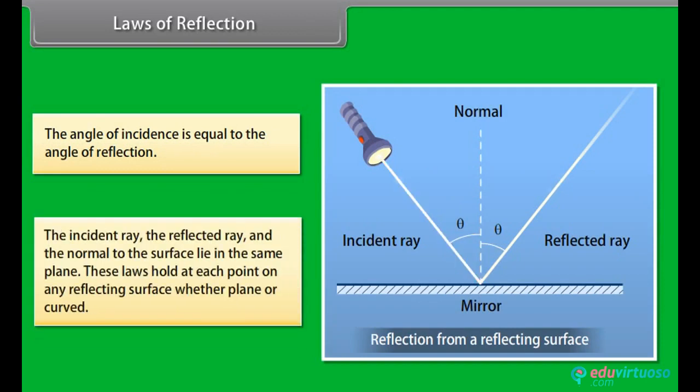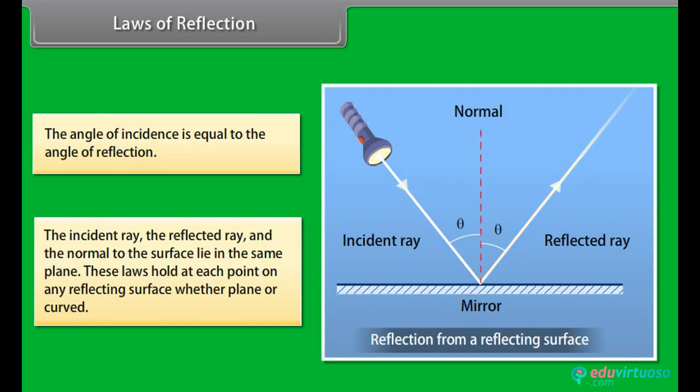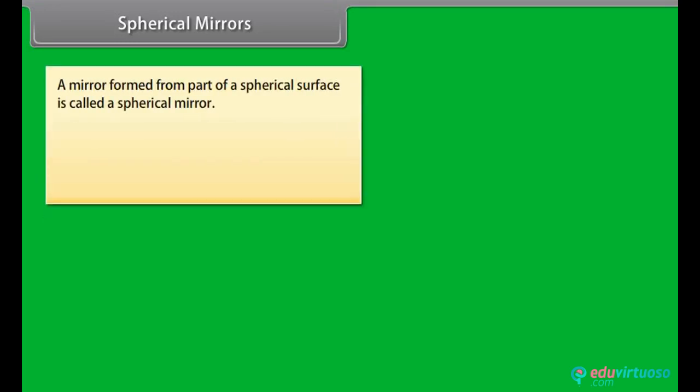The incident ray, the reflected ray, and the normal to the surface lie in the same plane. These laws hold at each point on any reflecting surface, whether plane or curved. A mirror formed from part of a spherical surface is called a spherical mirror.